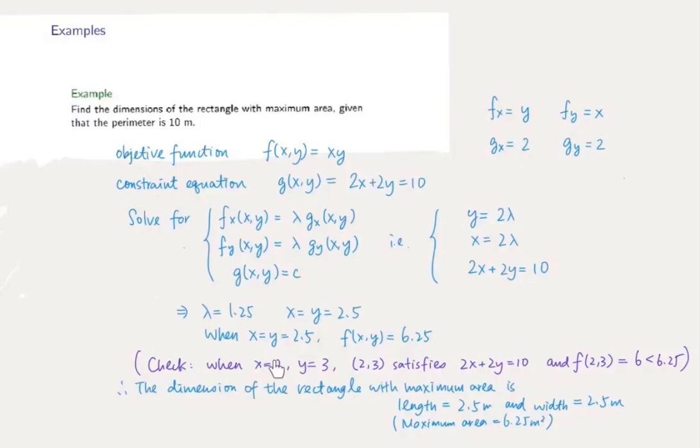We consider when x equals 2 and y equals 3, and we need to make sure that this point we check fulfills our constraint 2x plus 2y equals 10. And we check that this gives a function output to be 6, which is less than 6.25.